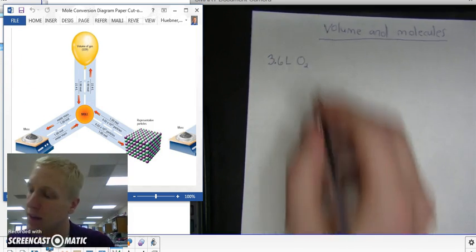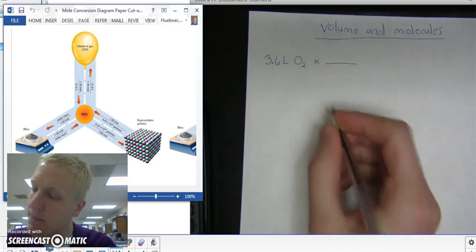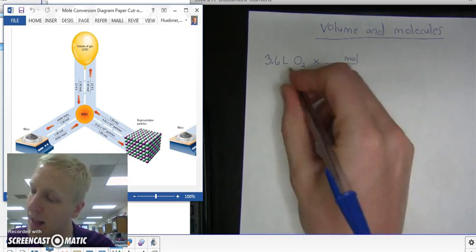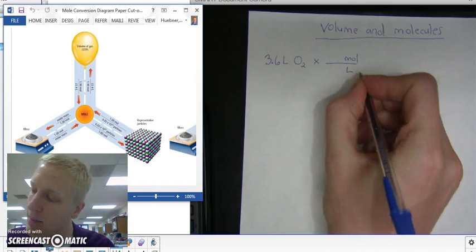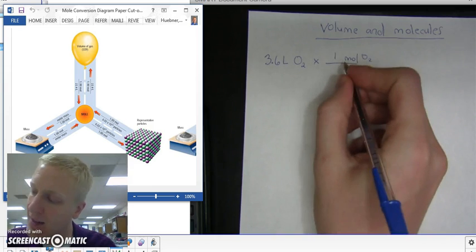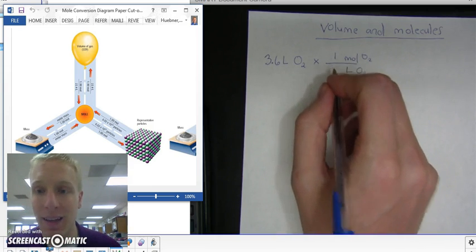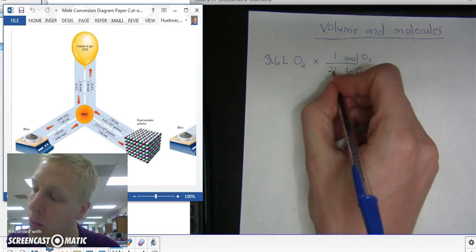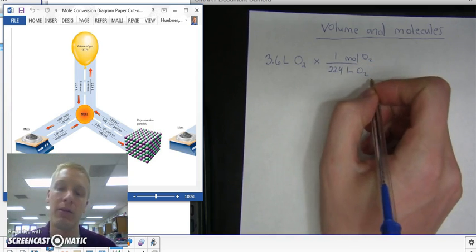So here's a conversion. I'm going to put what I want on top, which is moles, and what I'm trying to get rid of on the bottom, which is liters. It's easier just to deal with one mole, because I know at STP I'm going to have 22.4 liters for every one mole.